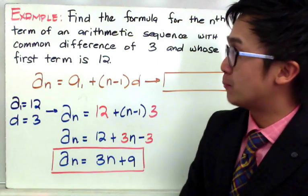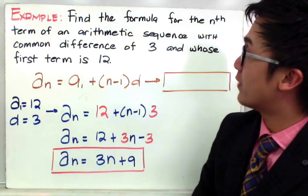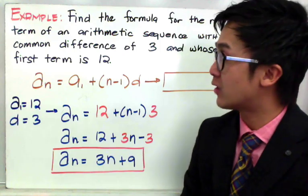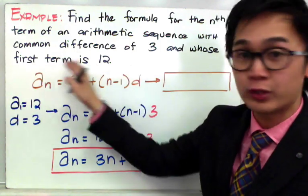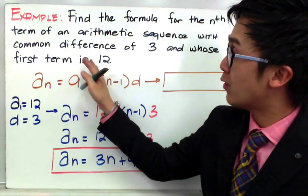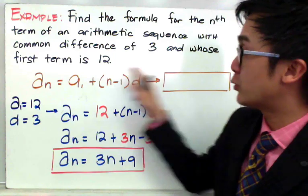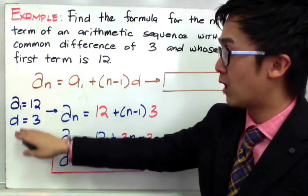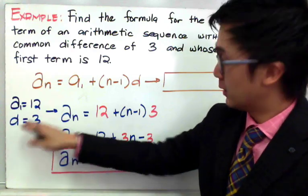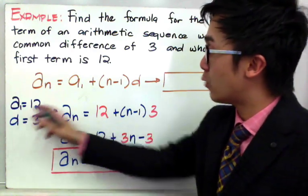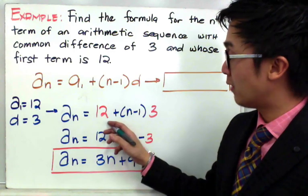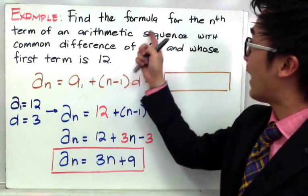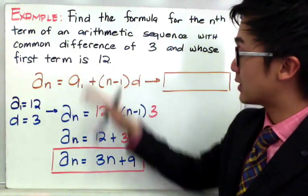For our next example, we're going to find the formula for the nth term of an arithmetic sequence with a common difference of 3 and whose first term is 12. In this case, we don't see a series of numbers — what we're given is the common difference and the first term from the word problem. Since this is an arithmetic sequence, we'll use the formula to solve it. The first term a sub 1 is 12 and the common difference d is 3.